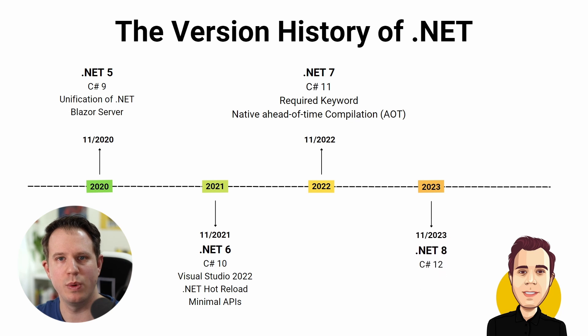In the foreseeable future, we will get a .NET and C# release every single year. In November 2023, we expect .NET 8 and C# 12. Starting with .NET 5, there was no reason to develop new applications based on the old .NET Framework anymore. Today, I cannot think of a scenario where the old .NET Framework would be a better choice for a new application than one of the current .NET versions. New .NET applications should target one of the supported versions, which at the time of this recording are .NET 6 or 7.